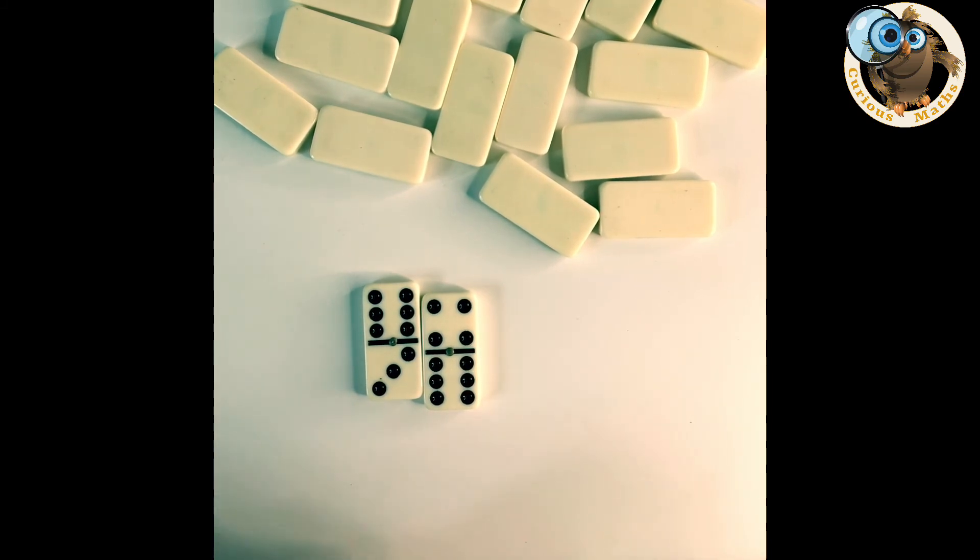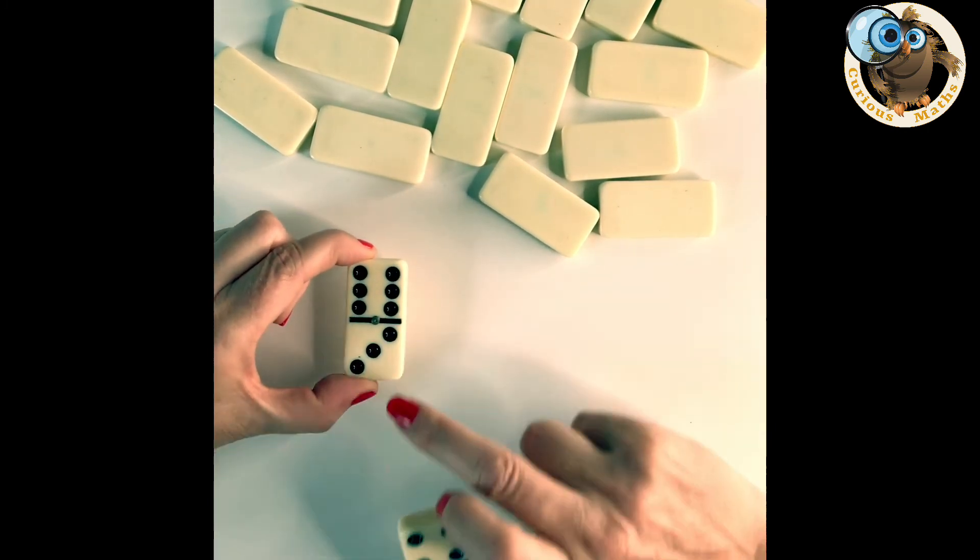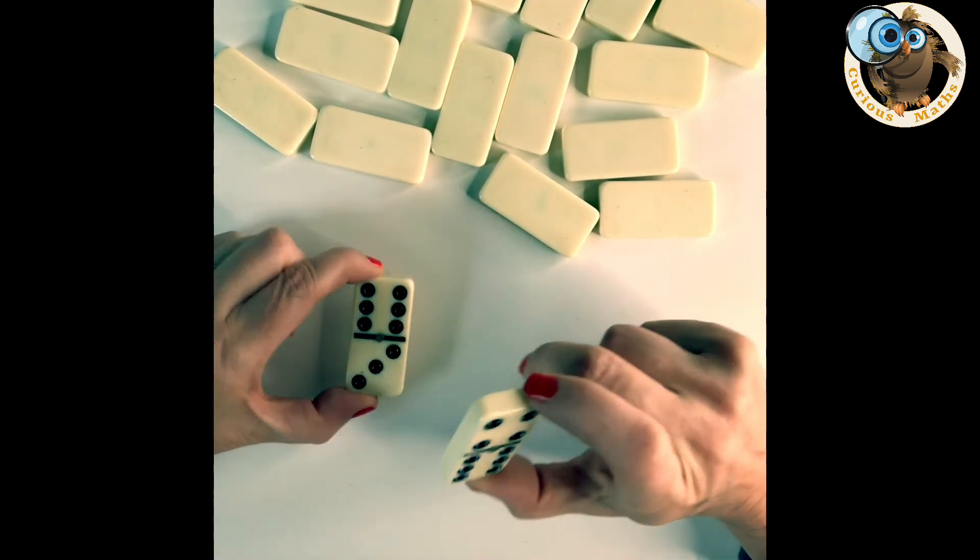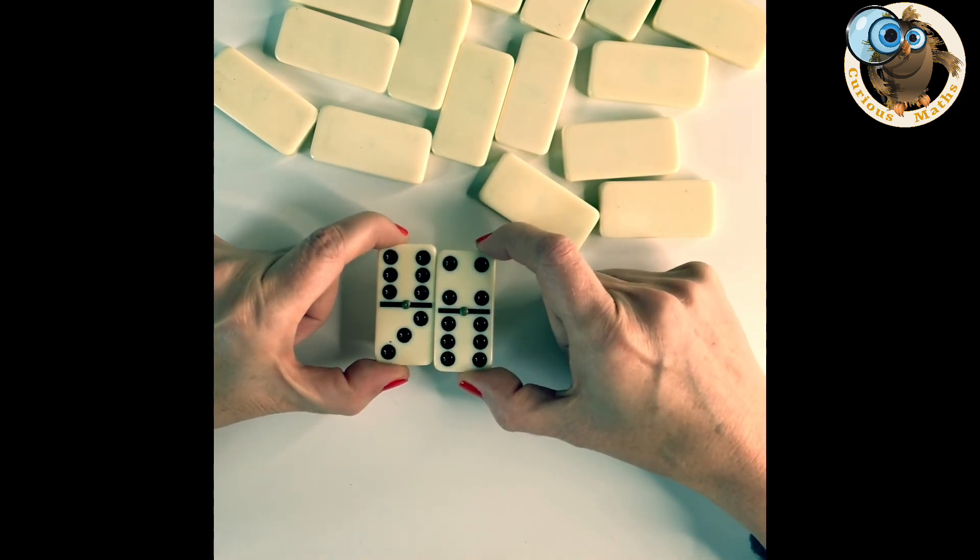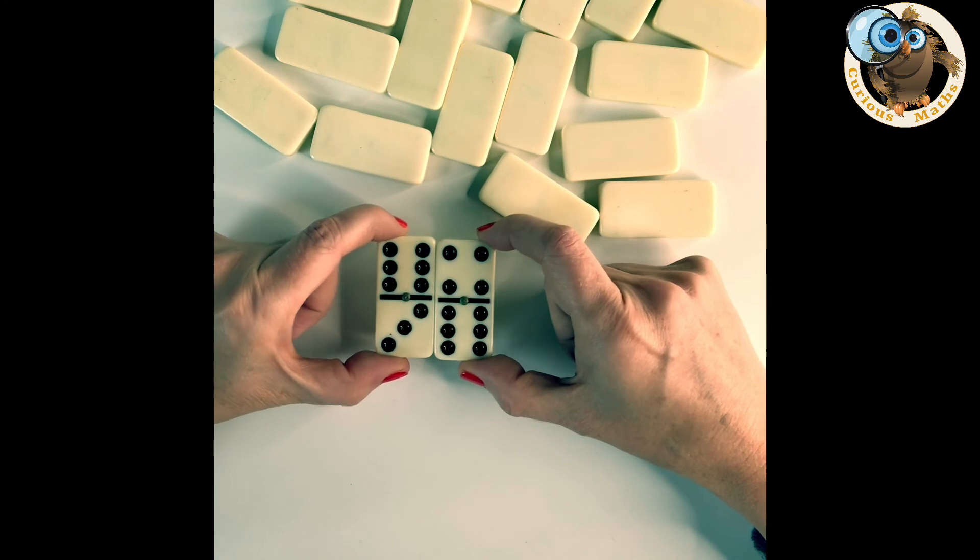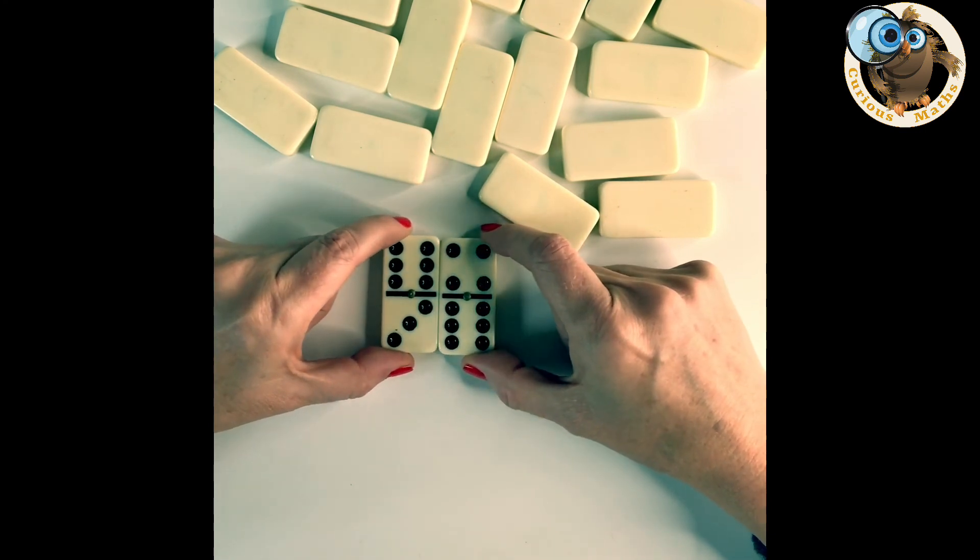But of course you could flip it the other way, it could be a race to 100 so instead of subtracting you're adding the sum of the two dominoes. You could increase the number of dominoes that you want your child or your group in your class to take away. You could multiply, so you could find the sum here 9, the sum here 10, multiply those together which would give you 90 and take it away from the value. Now I think you'd probably need to start with a higher number value for that.